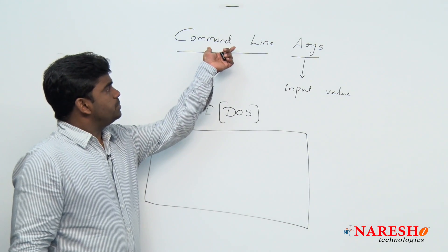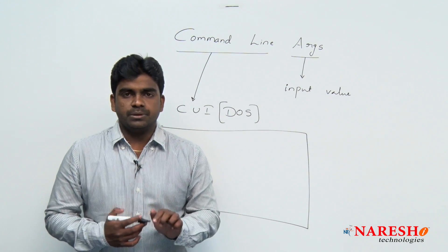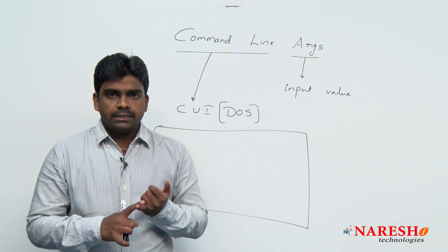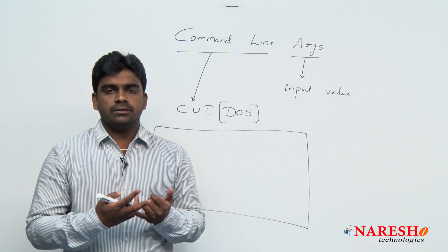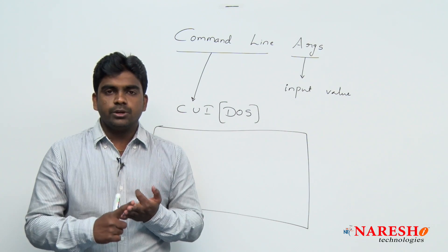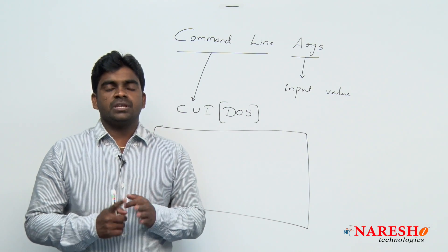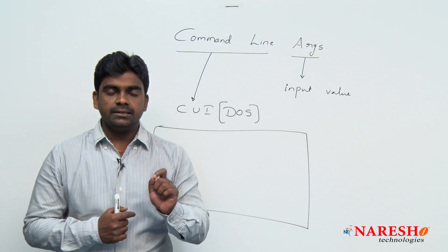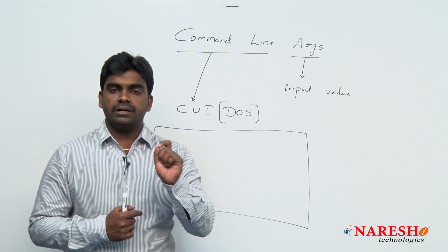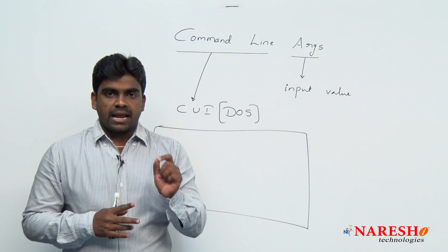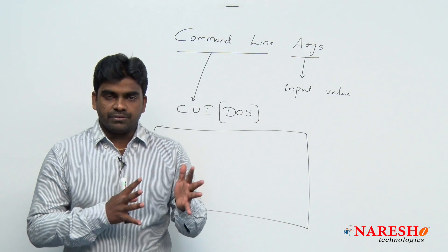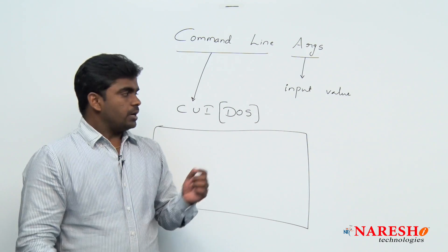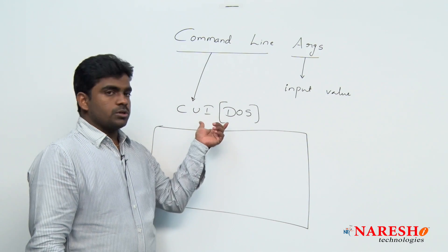What is the meaning of command line arguments? Generally, we can write, compile and execute C programs using the blue screen. The blue screen we can call it as an IDE — integrated development environment. IDE we already discussed in previous sessions. Right now the discussion is about the DOS operating system.